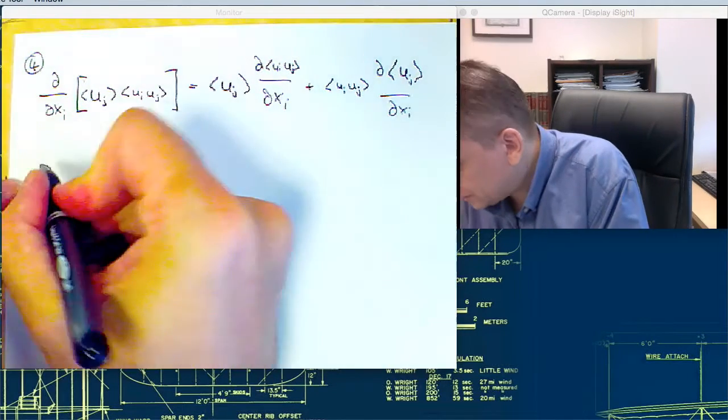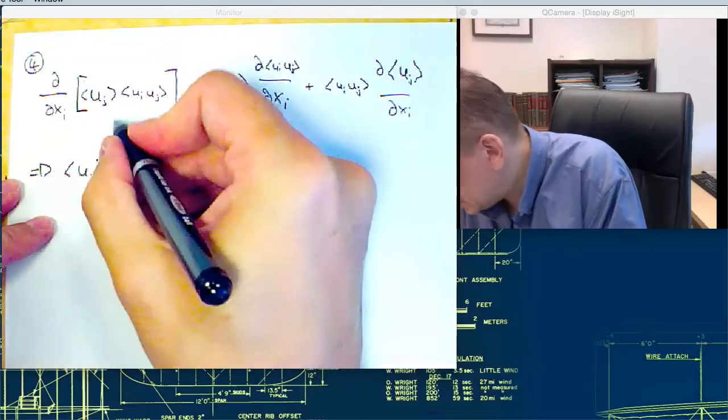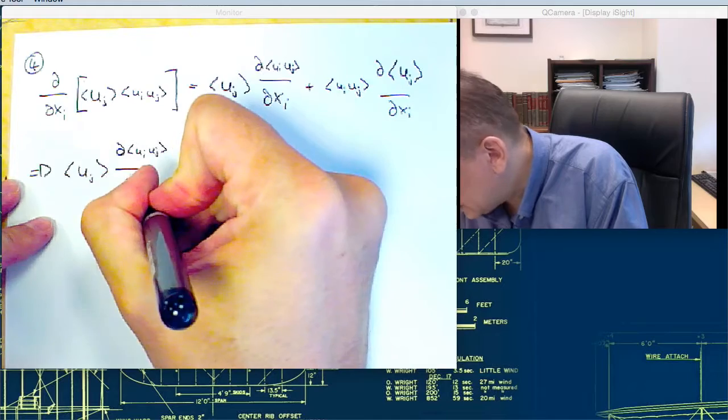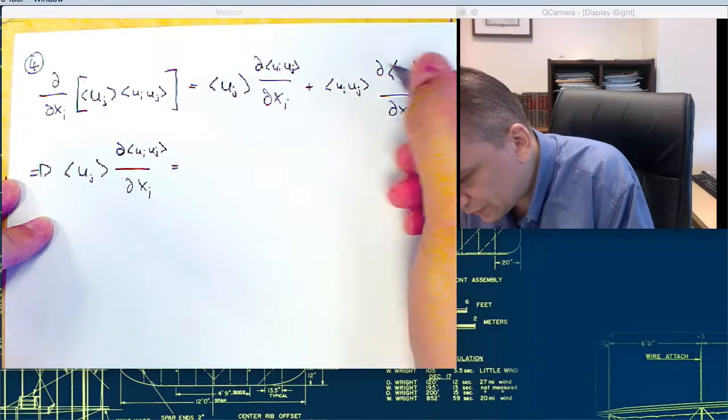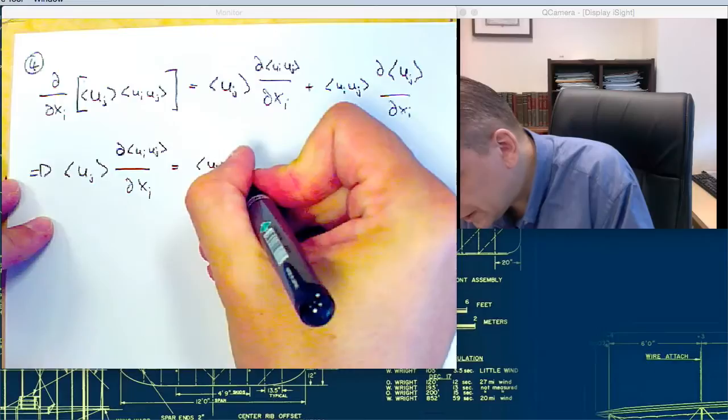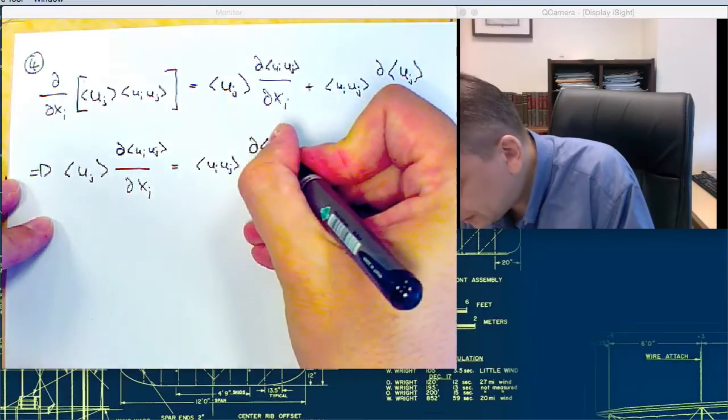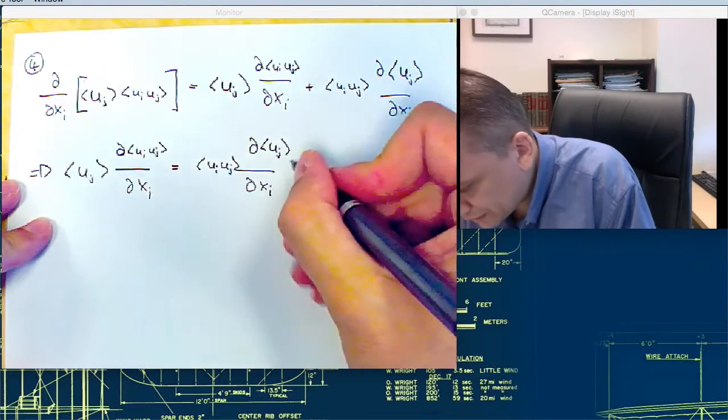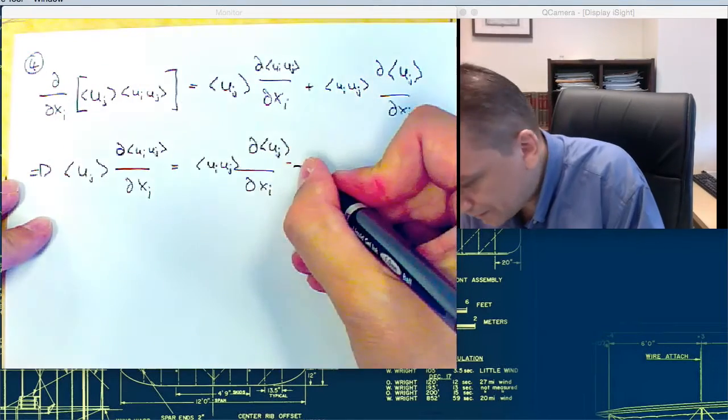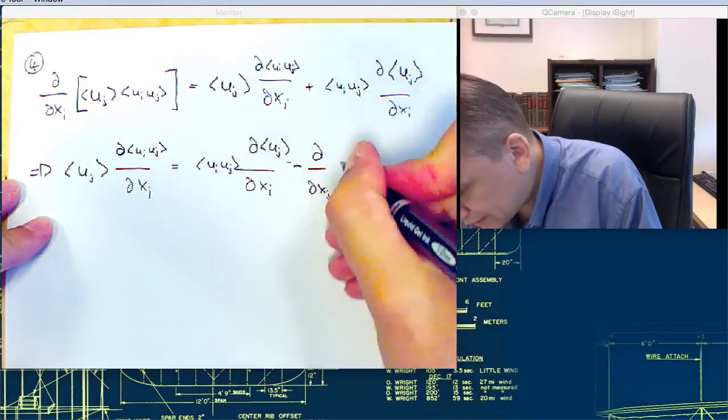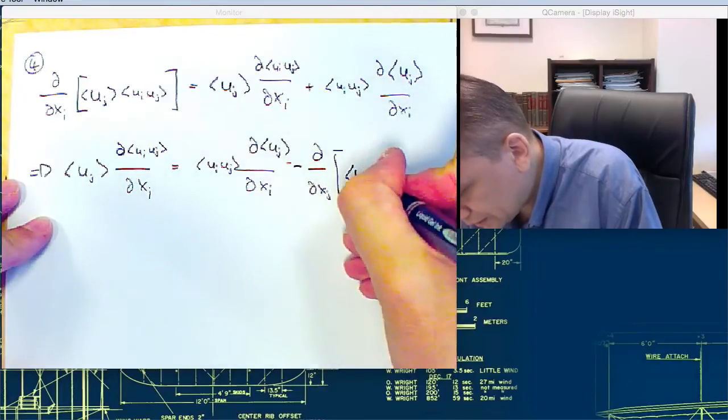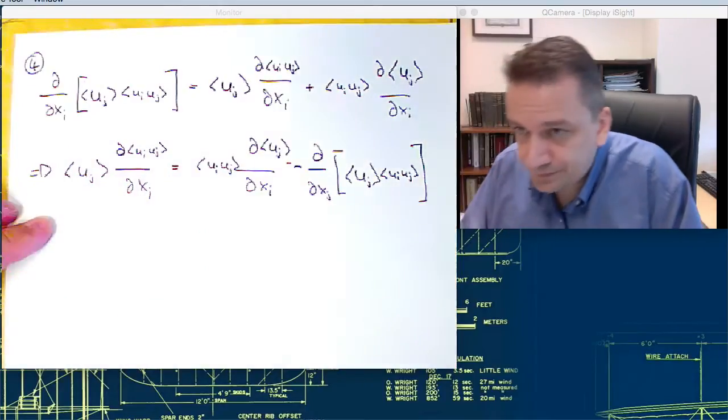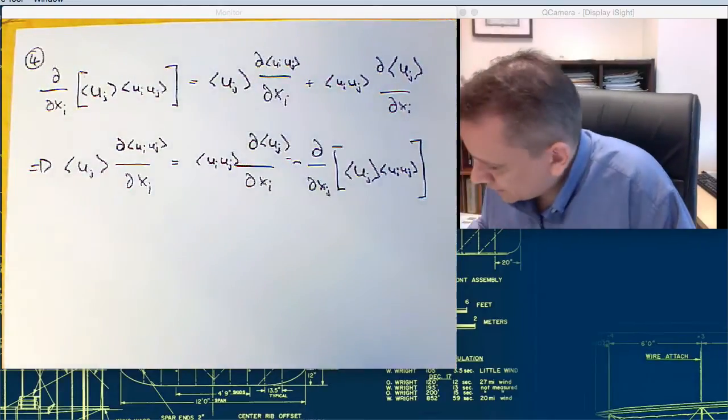So you see, this is actually the term that we want to have, the dui uj times the multiply with the mean velocity. So from that follows that uj dui uj dx i is this term over here minus d dx i, minus this term over here that we started with: d dx j uj ui uj.